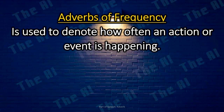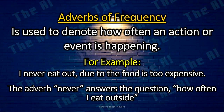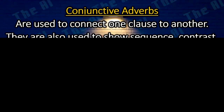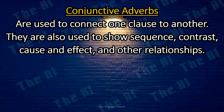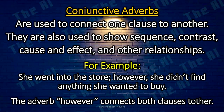Adverbs of frequency. The adverb of frequency is used to denote how often an action is happening. For example: I never eat out, due to the food being too expensive. The adverb never answers the question: how often I eat outside. Conjunctive adverbs. The conjunctive adverbs are used to connect one clause to another. They are also used to show sequence, contrast, cause and effect, and other relationships. For example: She went into the store; however, she didn't find anything she wanted to buy. The adverb however connects both clauses together.